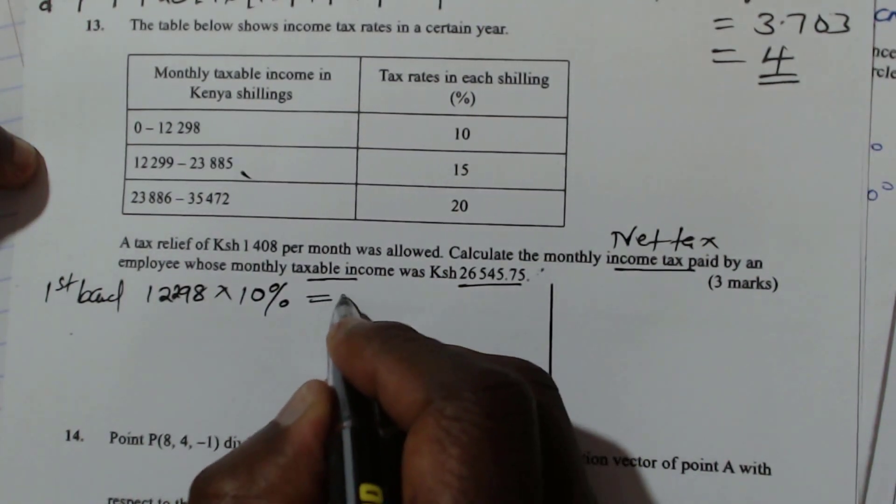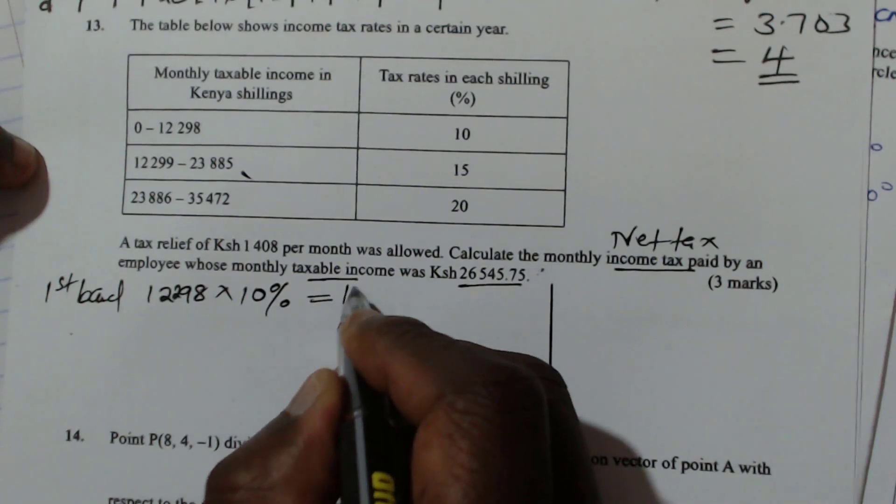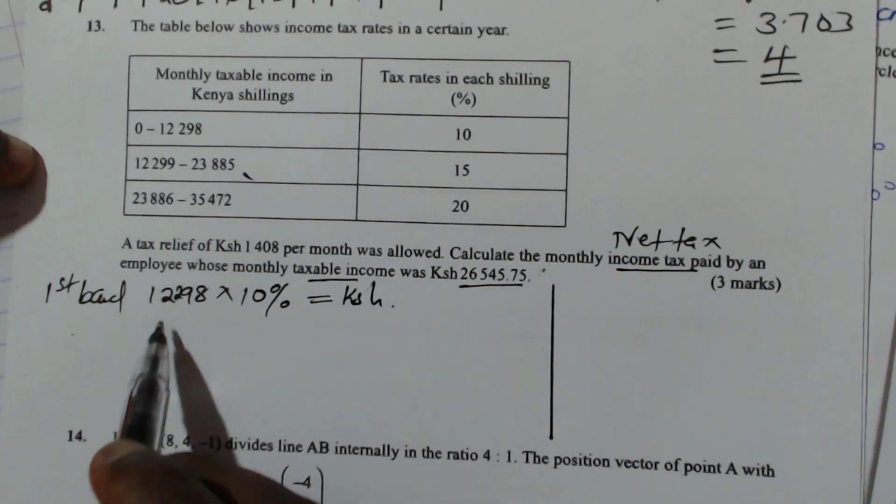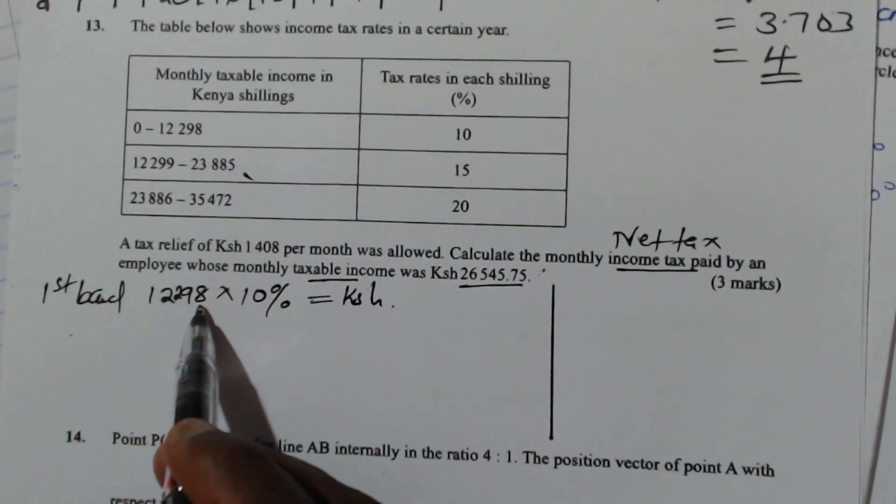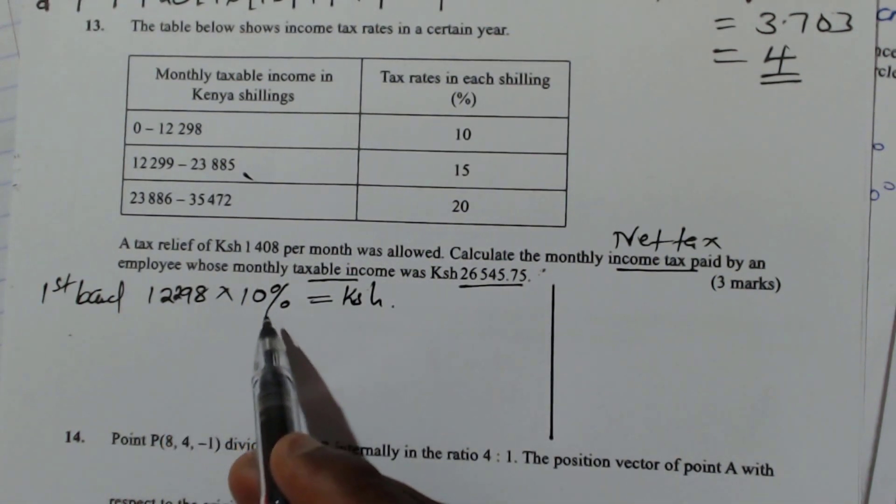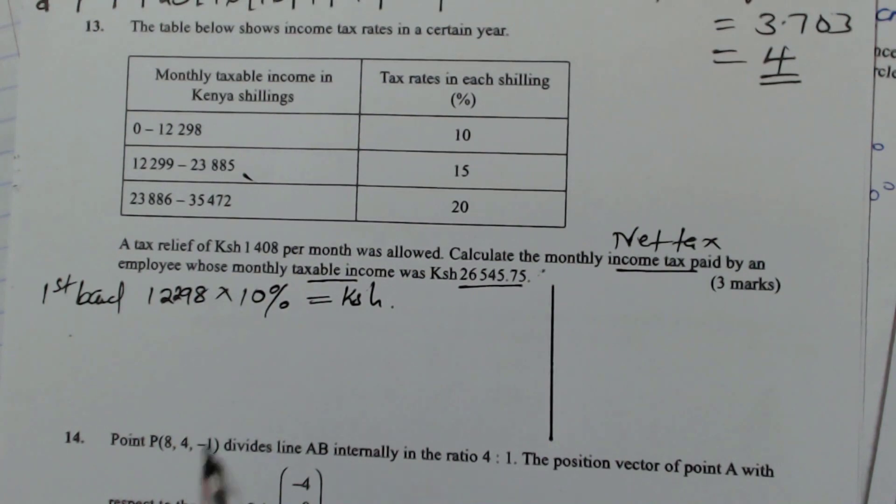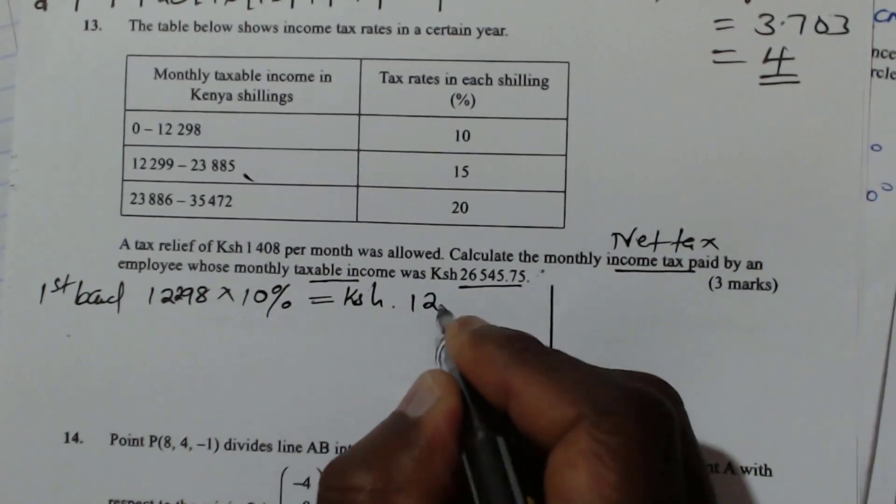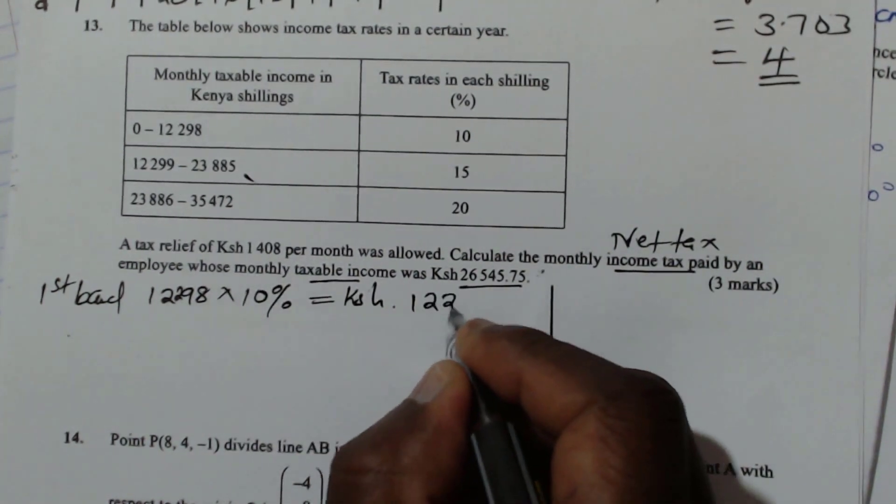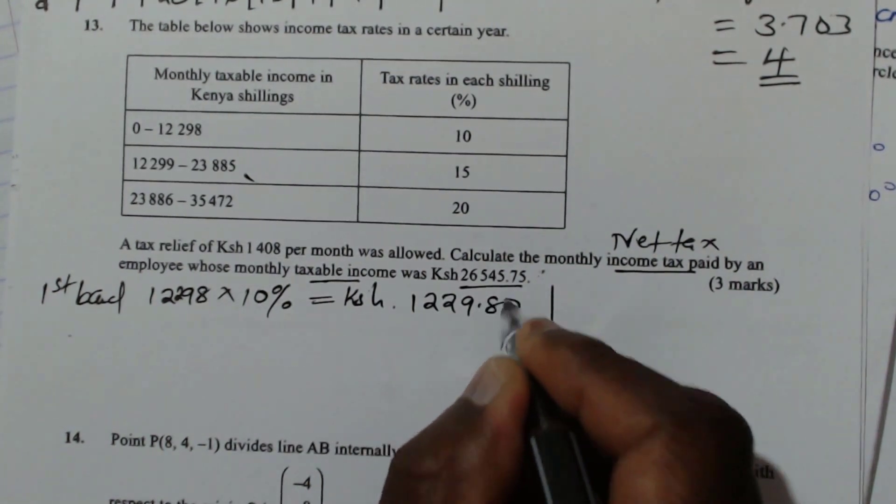So the tax will be in cash shillings. So 12,298, multiply by 10%. And that will give 1229.80 cents. That is the first band.